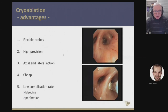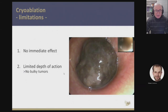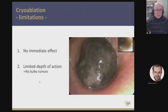Coming to cryoablation: we have flexible probes, it's highly precise, and we can address lesions quite precisely. We have axial and lateral action. It's relatively cheap and has a low complication rate with respect to bleeding or perforation. But we have no immediate effect — the tissue is left behind in the bronchial system, and a few days later the necrotic tissue has to be removed. In a case with a melanoma metastasis in the left main bronchus, you can only freeze to a certain depth and no further, so you have to repeat the procedure several times. This technique is not useful for bulky tumors, but it's very helpful in early cancer and granulation tissue.